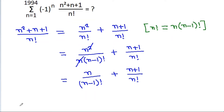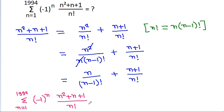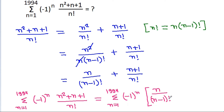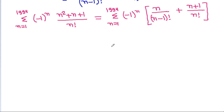We need to find the summation from n equal to 1 to 1994 of (-1)^n times (n² + n - 1)/n!, which equals the summation of (-1)^n times [n/(n-1)! + (n+1)/n!].